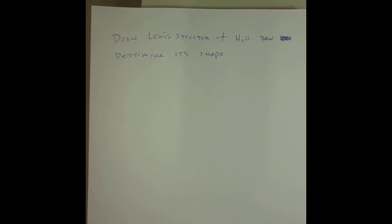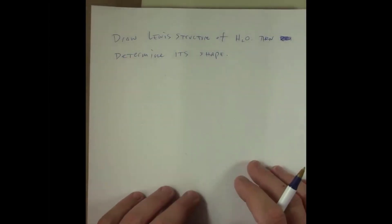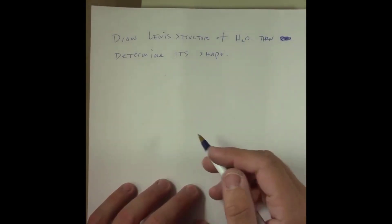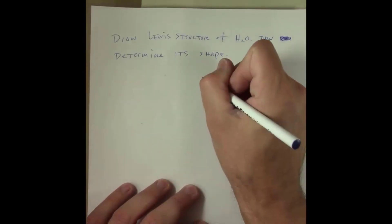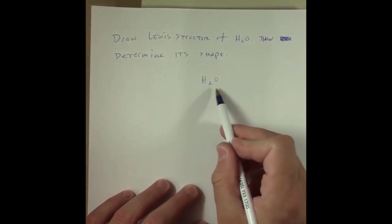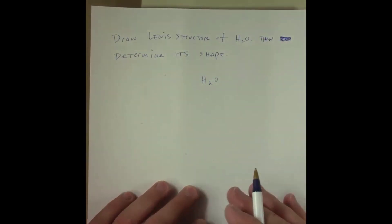As I've discussed in an earlier video, to determine the Lewis structure of a compound, we first write out the compound's formula H2O and determine how many valence electrons each of the atoms in that molecule has.